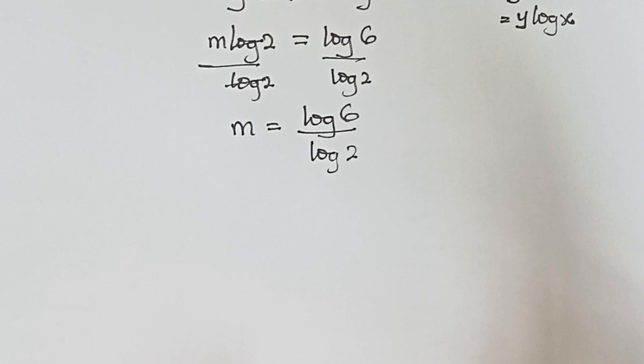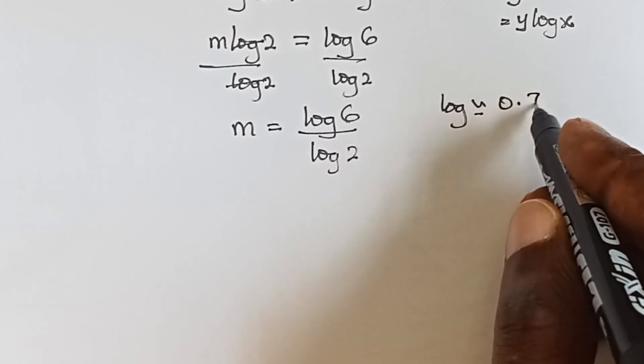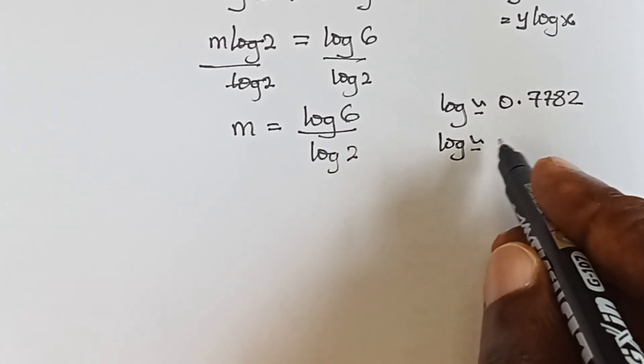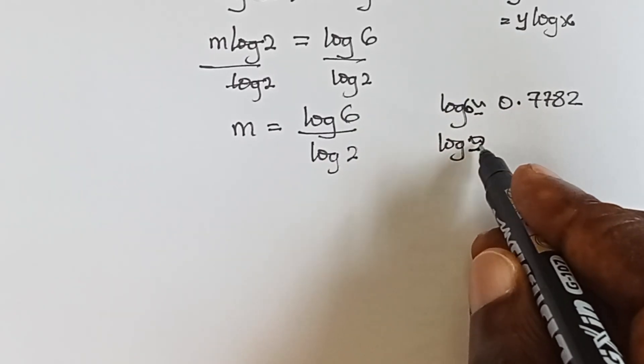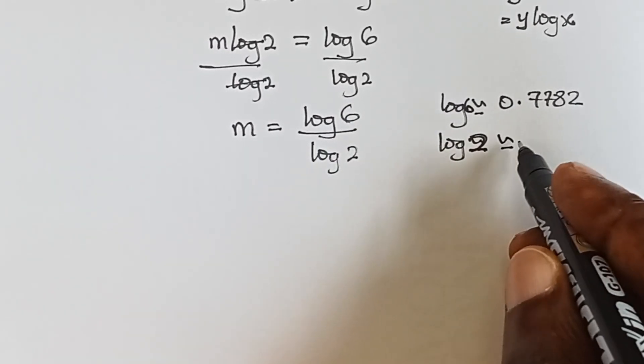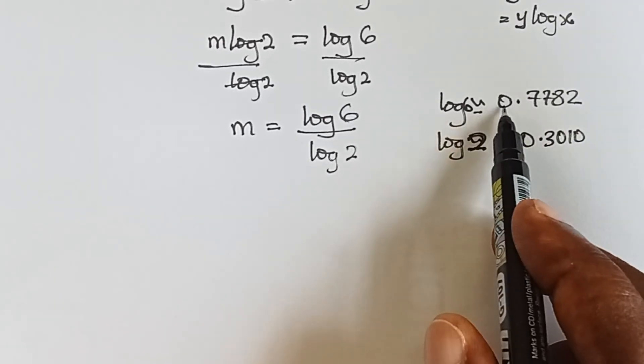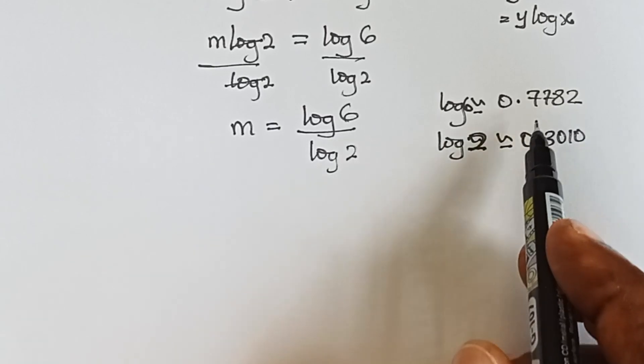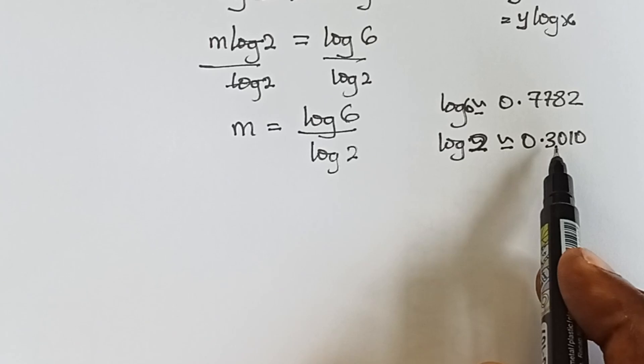What is log 6 and what is log 2? Log 6 is equivalent to 0.7782, and log 2 is equivalent to 0.3010. That's to four decimal places.